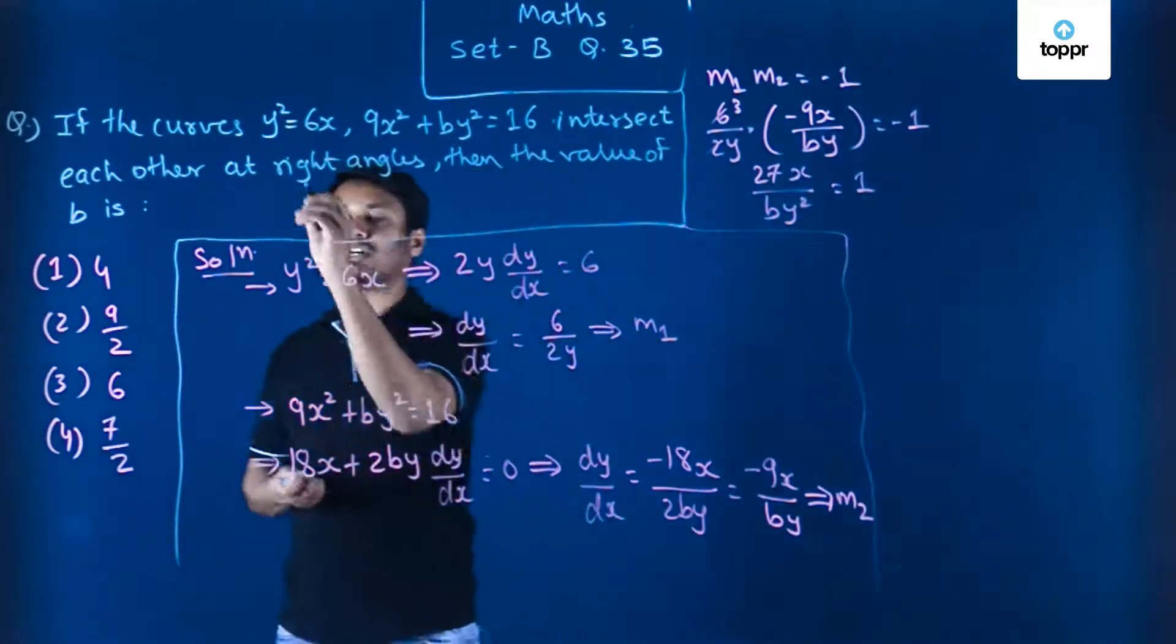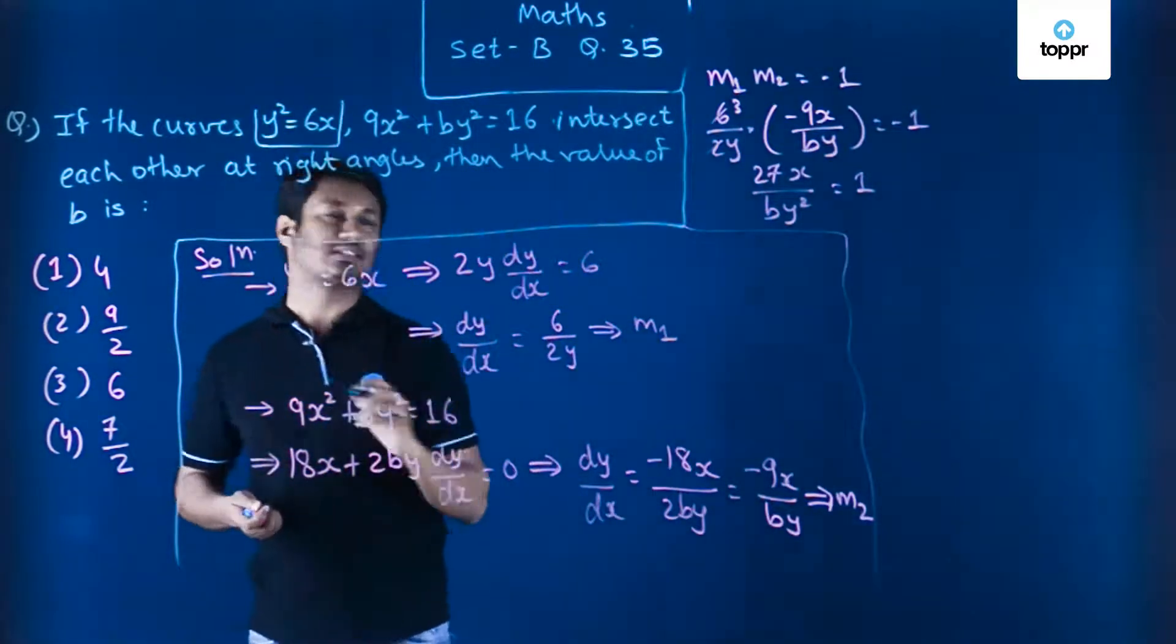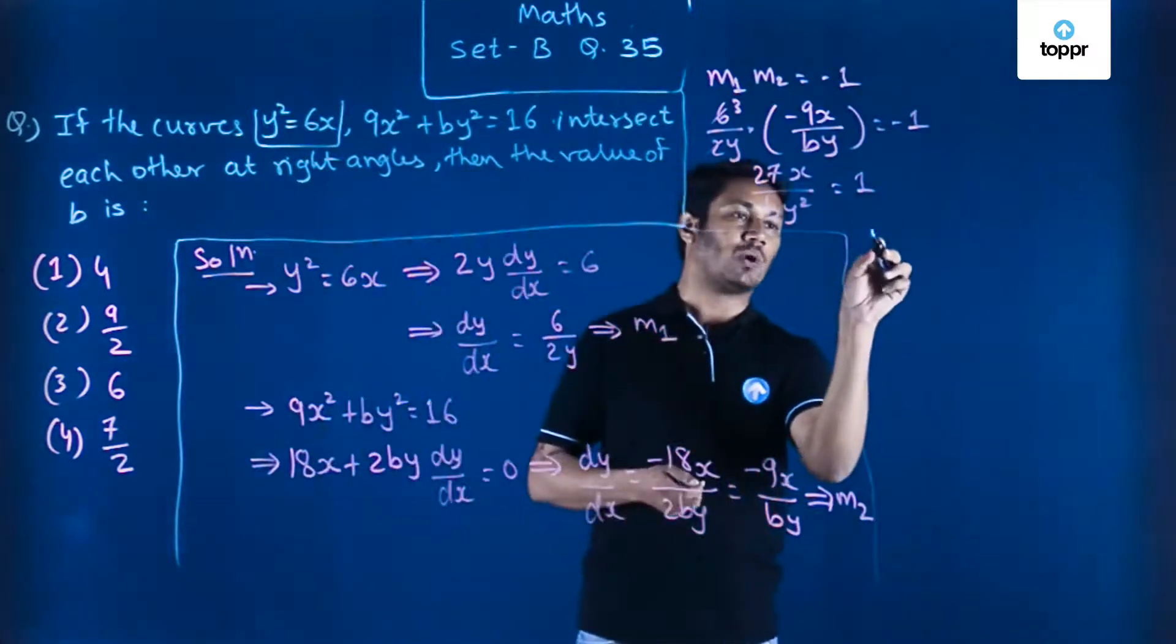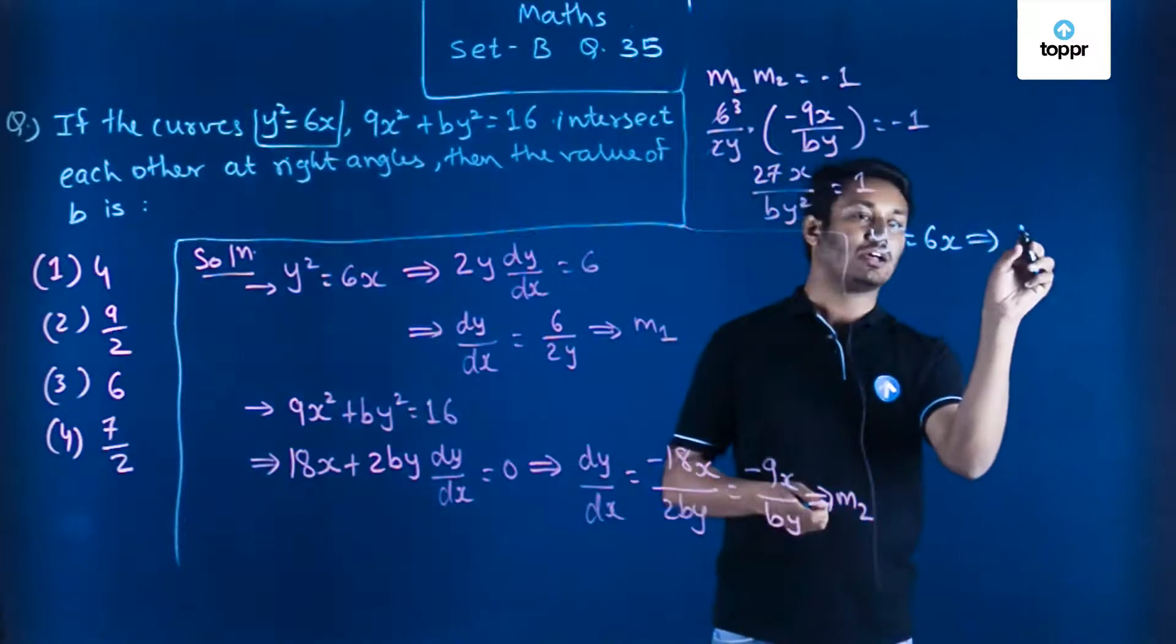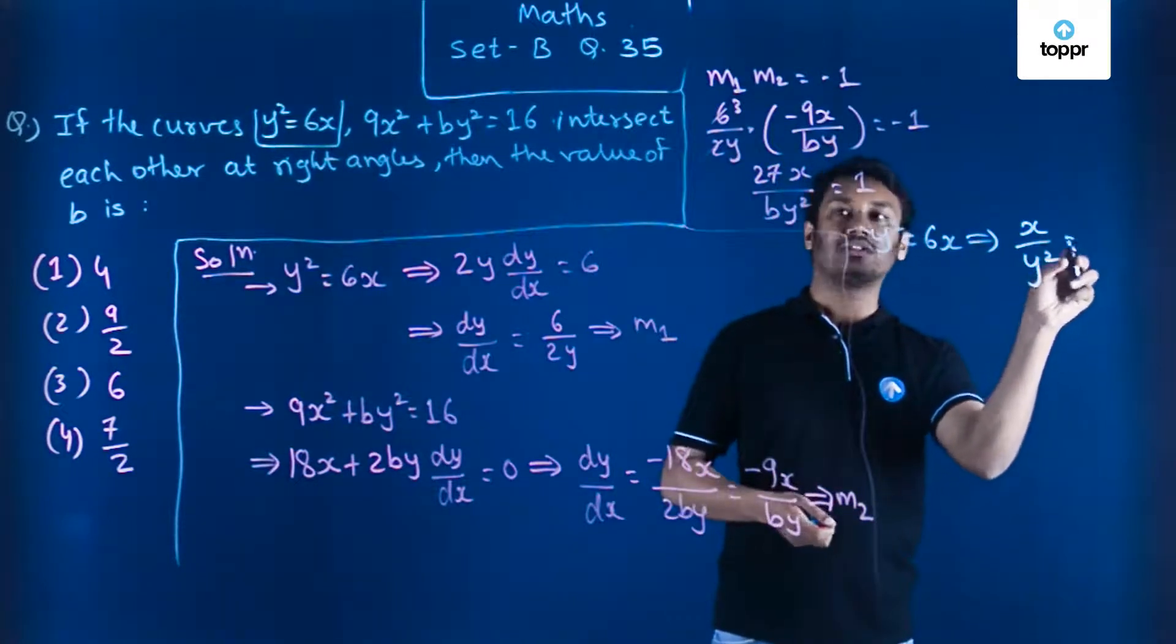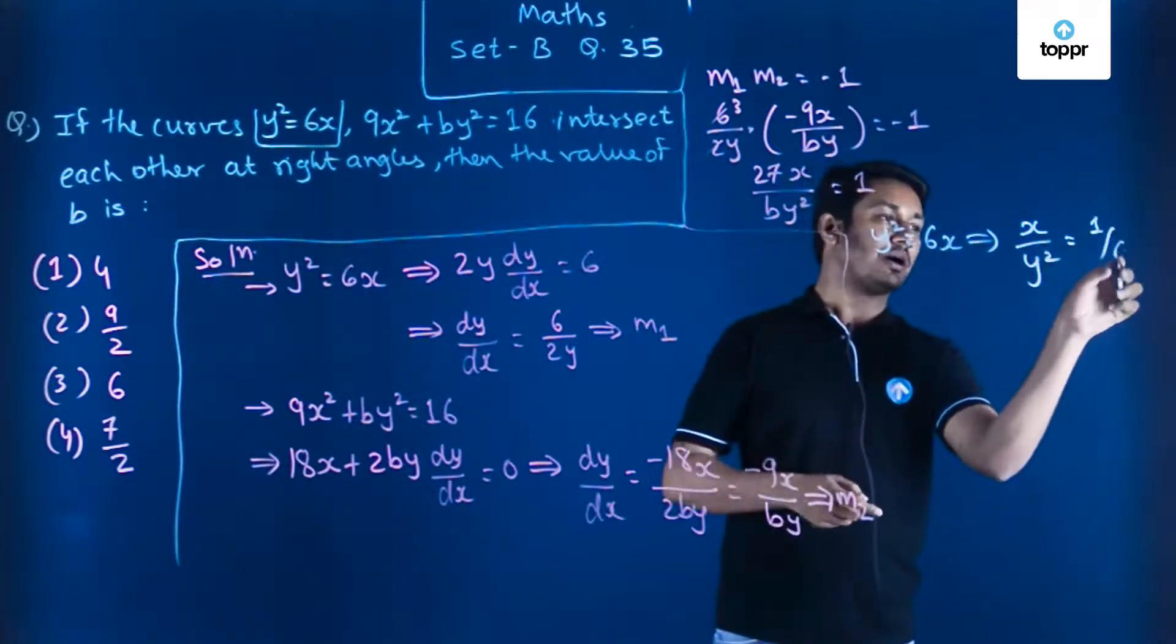You can see that from the first curve, which is y² = 6x, from here I can easily make out that x/y², this value will be nothing but 1/6. So I can use this value very much in this particular relationship.